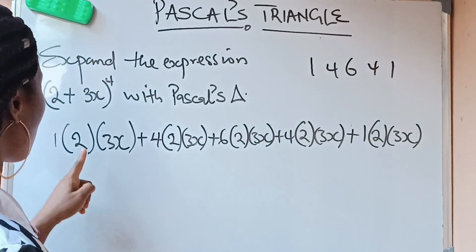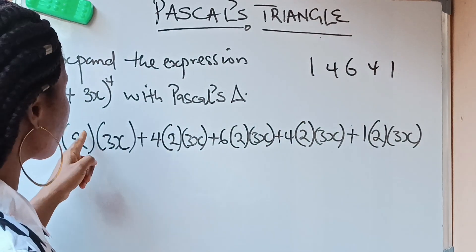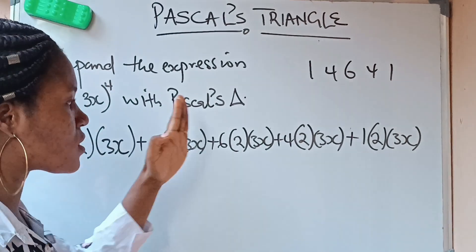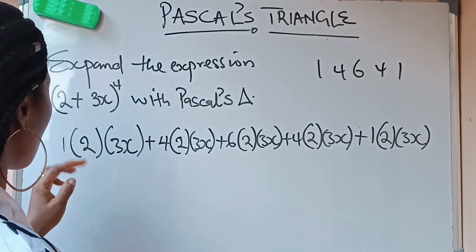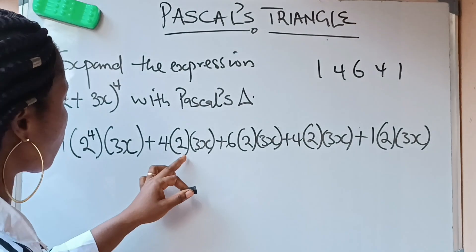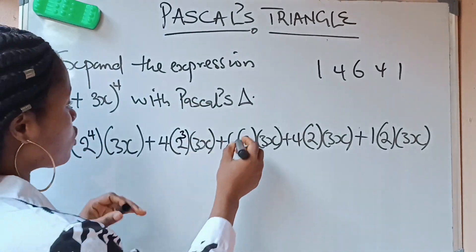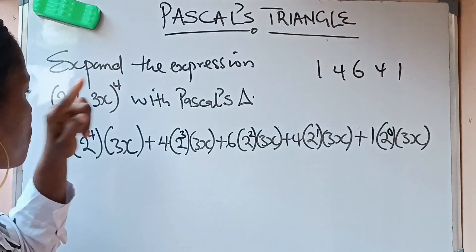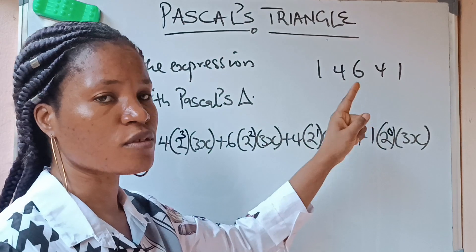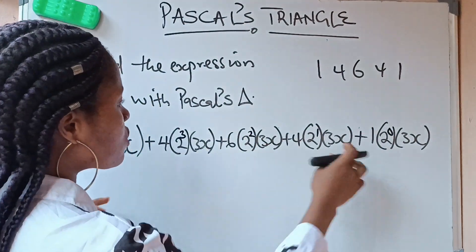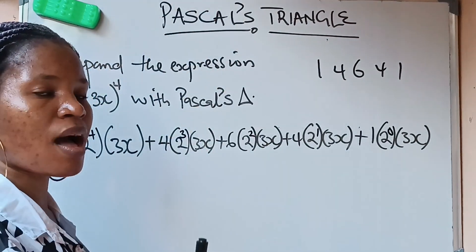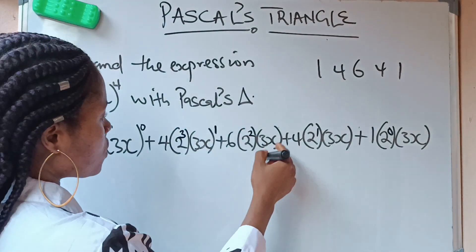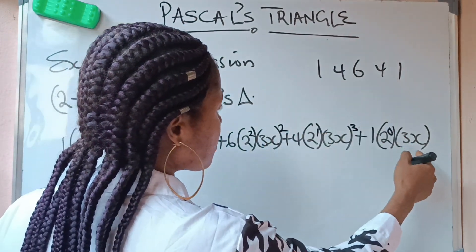We start adding the powers of 2 from 4, because this is raised to the power of 4, and we reduce it as we go: 2^4, 2^3, 2^2, 2^1, 2^0. We are done with 2. Then for 3x, we add the power from the lowest to the highest, starting from 0: (3x)^0, (3x)^1, (3x)^2, (3x)^3, (3x)^4.